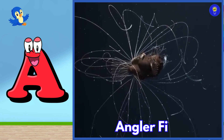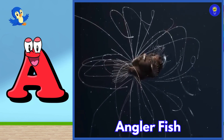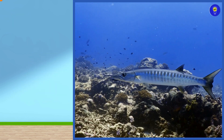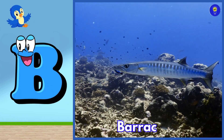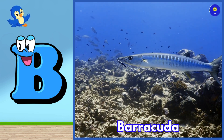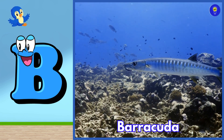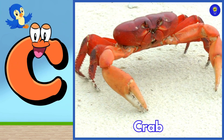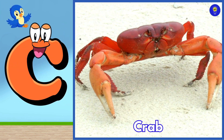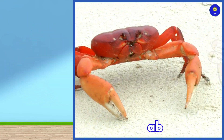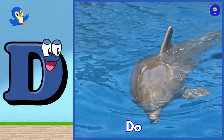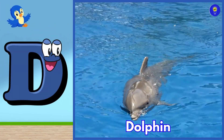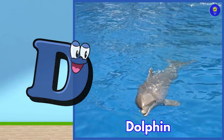A is for anglerfish. Ah, anglerfish. B is for barracuda. Buh, barracuda. C is for crab. Kuh, crab. D is for dolphin. Duh, dolphin.